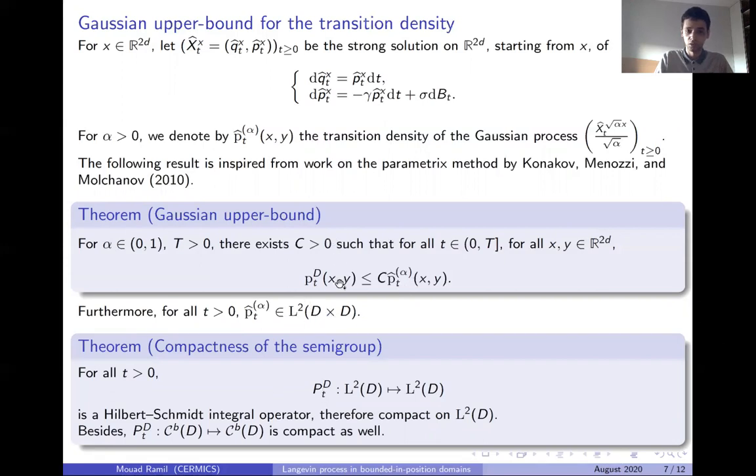This is interesting because we can show that this density Pt alpha is in L2 D times D, which means that using this equality, we can prove that PtD is a Hilbert-Schmidt integral operator. Therefore, it's compact on L2 D, and it allows us to apply to this semigroup well known results like Krein-Rutman theorem to obtain eigenvectors and eigenvalues to the semigroup. We can also show that this semigroup is compact on the Banach space of the continuous and bounded functions on the domain D.